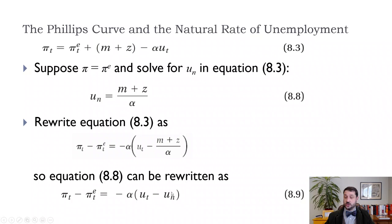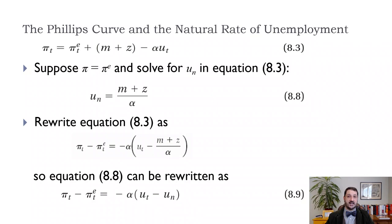If the unemployment rate is lower than the natural rate, the parentheses term is negative, and multiplying by negative alpha gives a positive result, so inflation is higher than expected. When unemployment equals the natural rate, the parentheses term is zero, the right-hand side is zero, and inflation exactly equals expected inflation. With adaptive expectations — where expected inflation equals last year's inflation — if unemployment is below the natural rate, inflation this year is higher than last year, and vice versa.